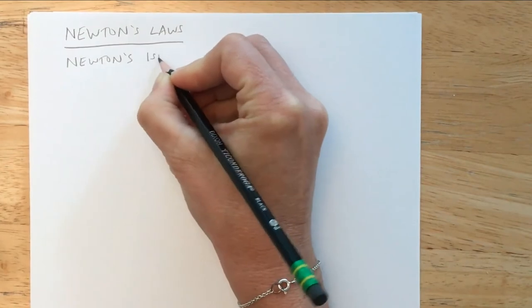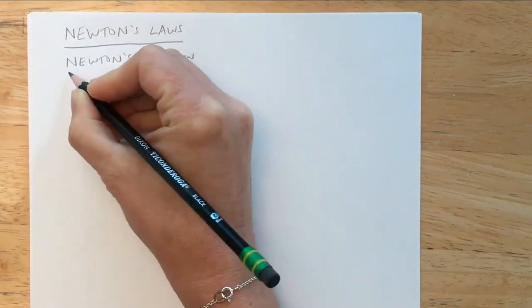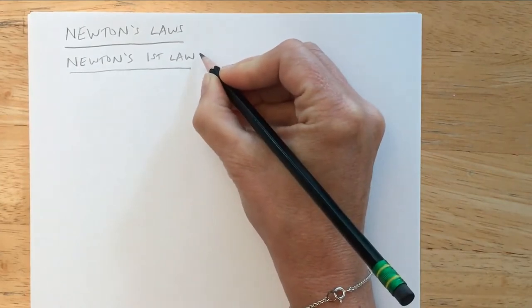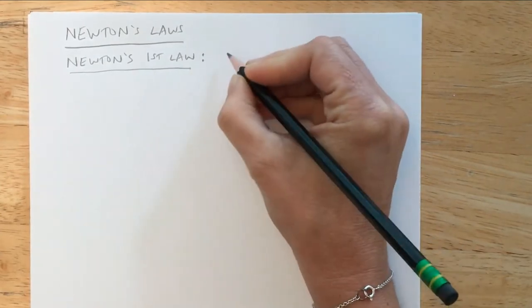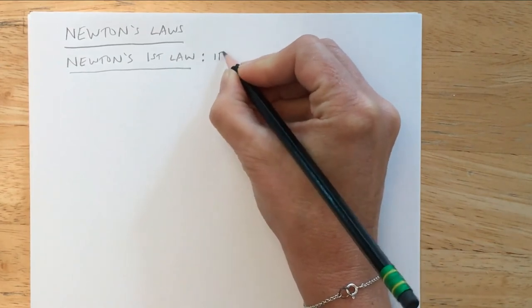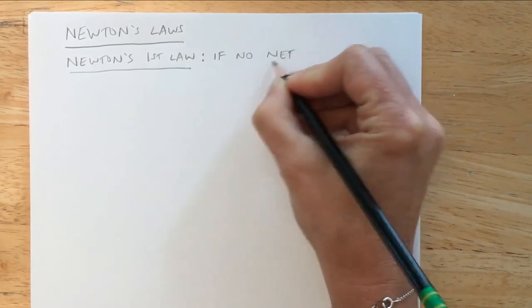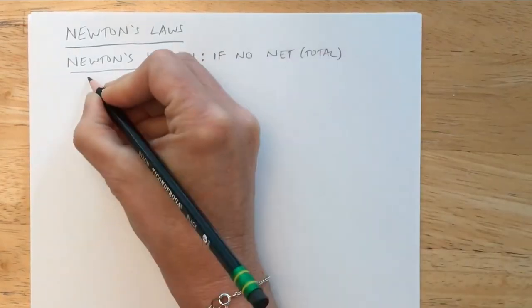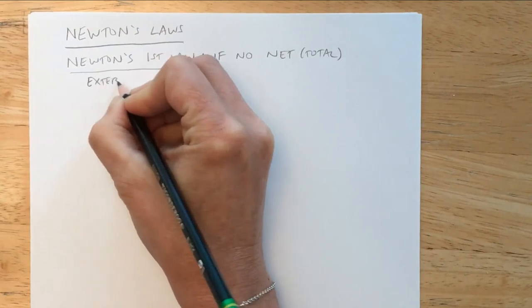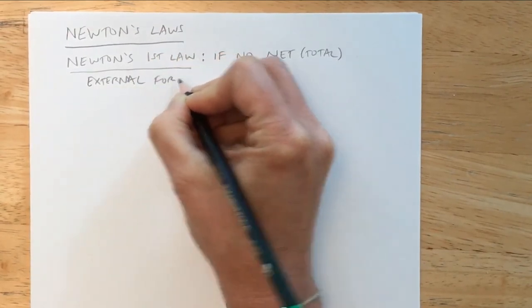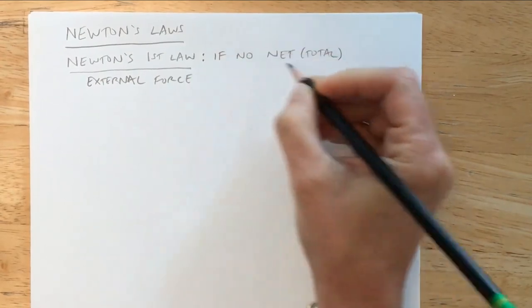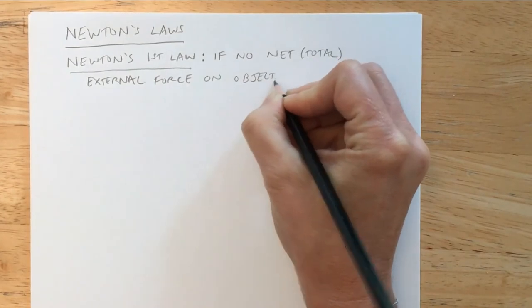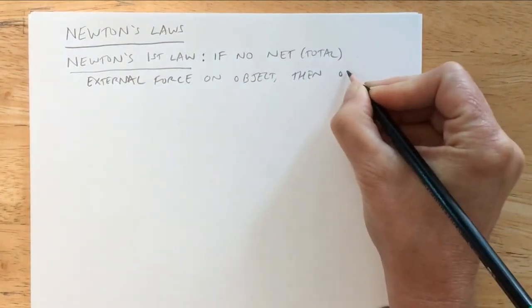Newton's first law is sometimes referred to as: an object in motion stays in motion, an object at rest stays at rest. But more specifically, it is stated that if there is no net — where 'net' means total — so no total external force acting on an object, then the object won't accelerate.